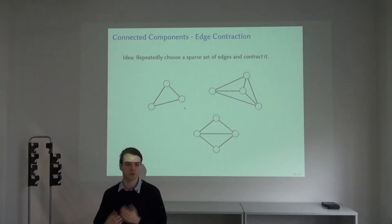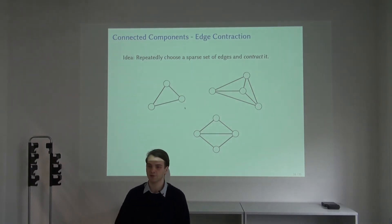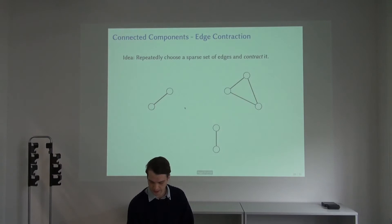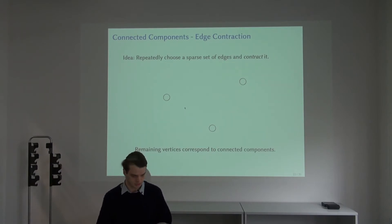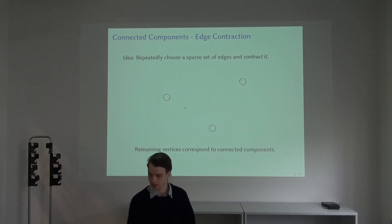Now let's turn to some of the core ideas of our algorithms. A very simple idea of how we could compute connected components in parallel is let's just choose some set of edges and then merge the endpoints of those edges. If we do this repeatedly until there are no edges, then the remaining vertices correspond to the connected components of the graph. If we just choose edges arbitrarily, this gives very poor performance.